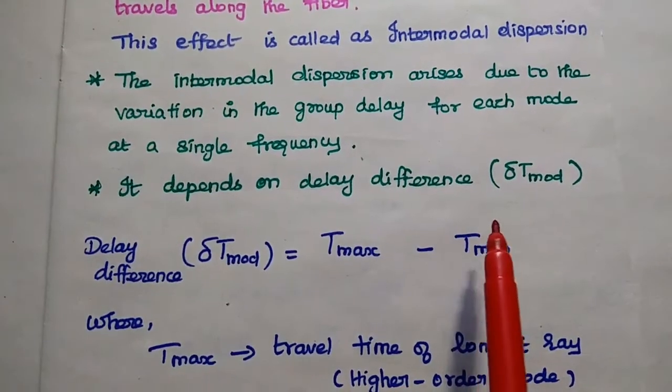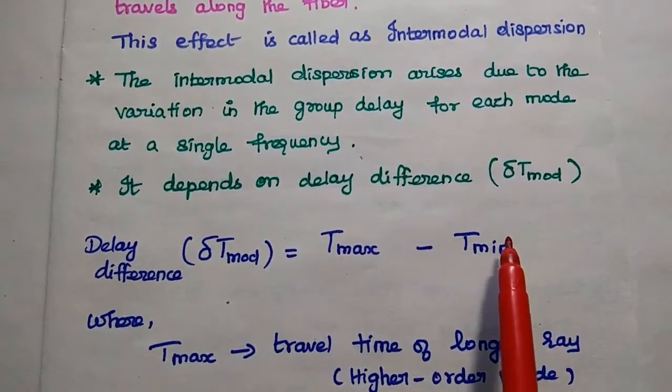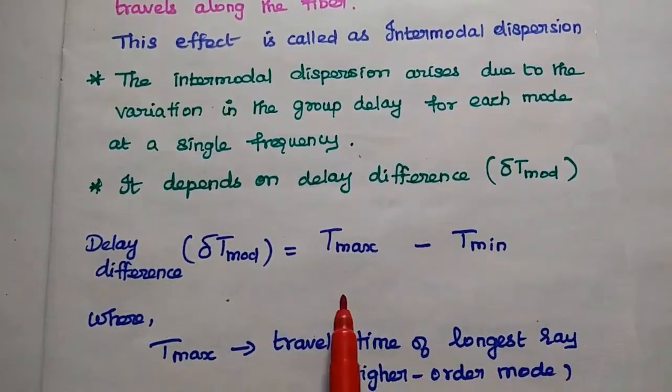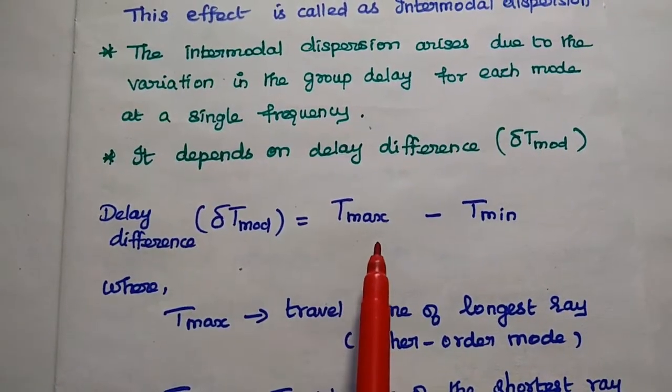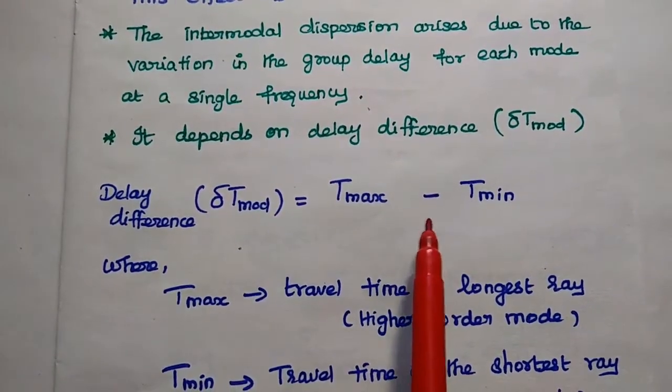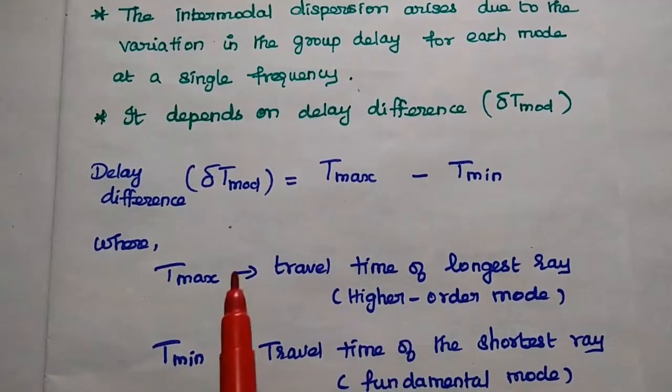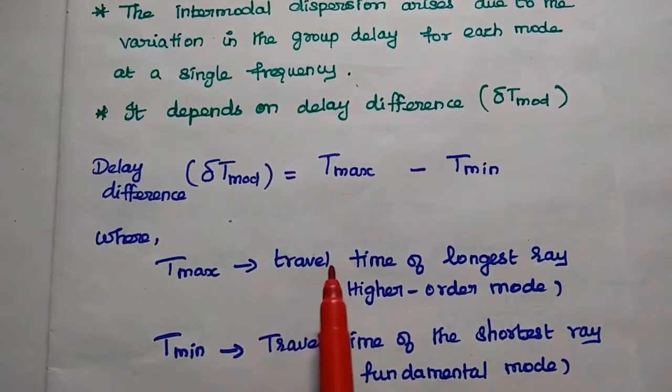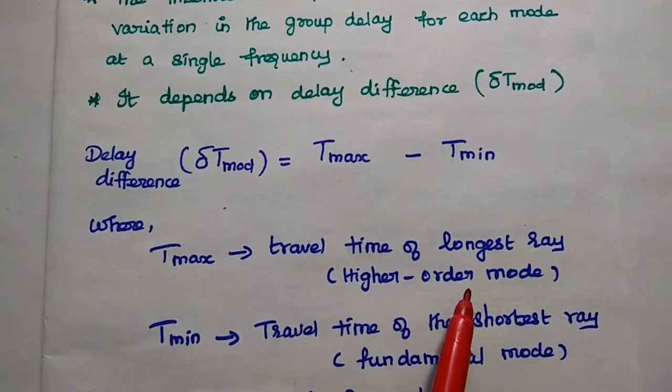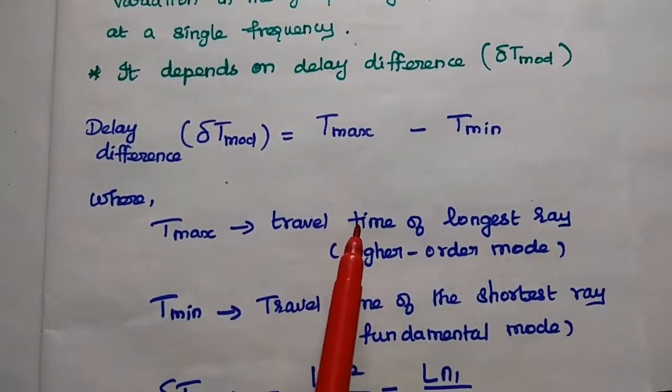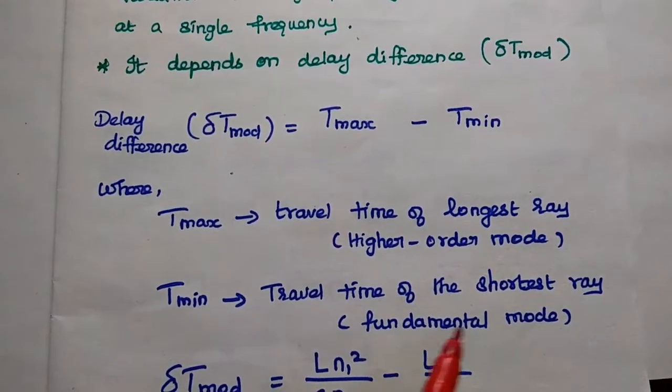So it is denoted as del T mode, that is the intermodal dispersion delay time. So it can be obtained by taking the difference between the maximum time to the minimum time. So here delay difference is equal to maximum time minus minimum time, where the maximum time represents the travel time of the longest ray, that is the higher order mode. Here the T min represents the minimum time of the shortest ray, that is the fundamental mode.